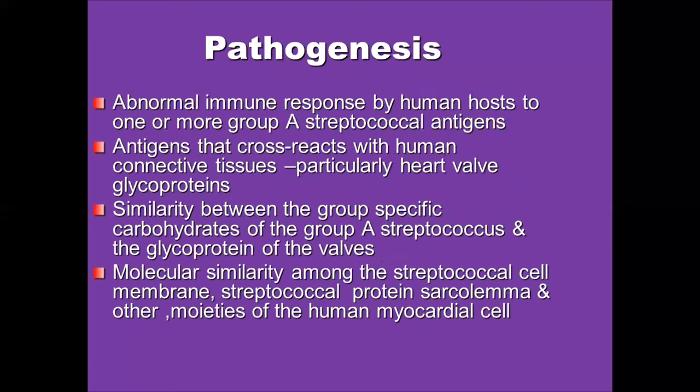Talking about pathogenesis, this condition is due to an abnormal immune response by the human host to one or more group A streptococcal antigens. The antigens present in group A streptococci cross-react with human connective tissues, particularly the heart valve glycoproteins. The similarity between the group-specific carbohydrate of group A streptococcus and the glycoproteins of the heart valve leads to molecular mimicry and damage to the heart valves.